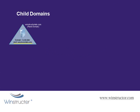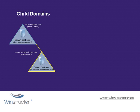In our current structure built in the previous video we have a couple of domain controllers called DC01 and DC02, although for space we've only included the reference to DC01 here. These two domain controllers are installed into a domain called winstructorlab.com. We'll be building upon that by adding a new child domain called london.winstructorlab.com, which will be installed on a server called DC03.